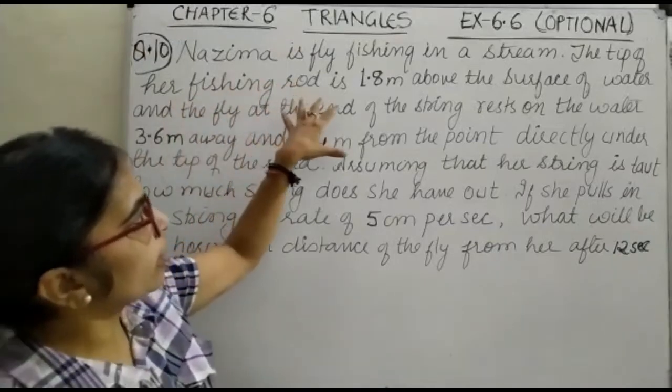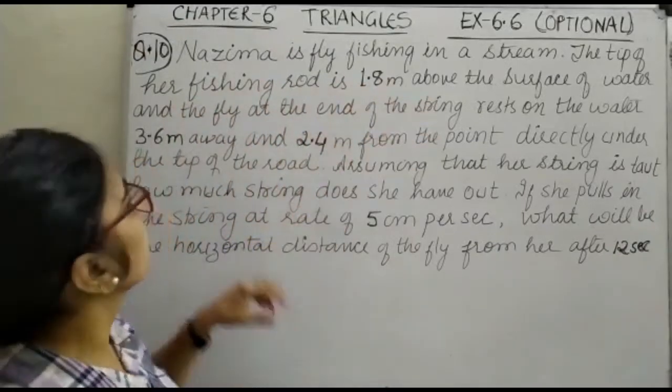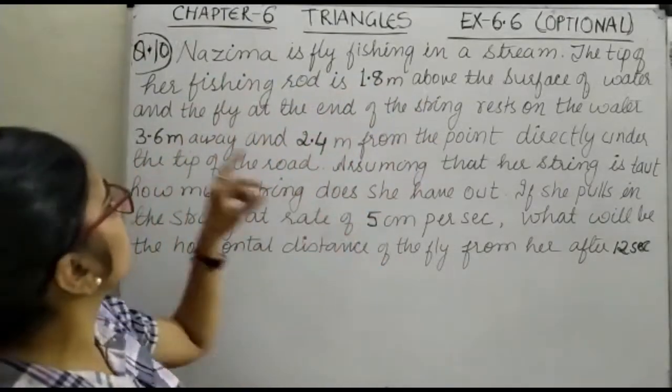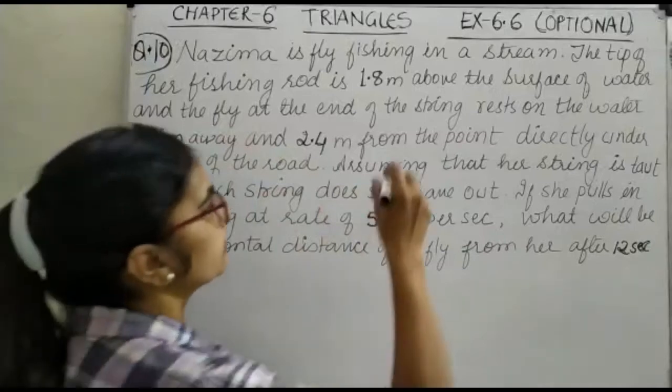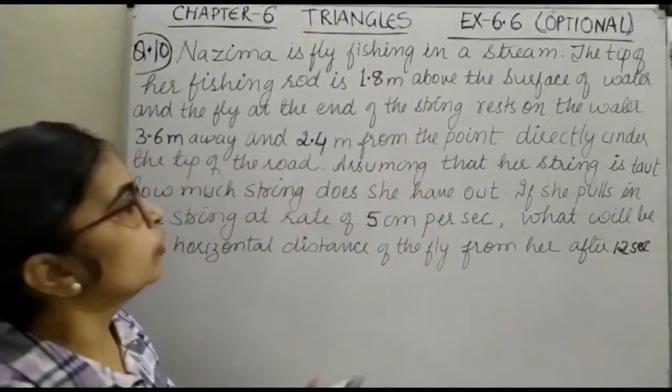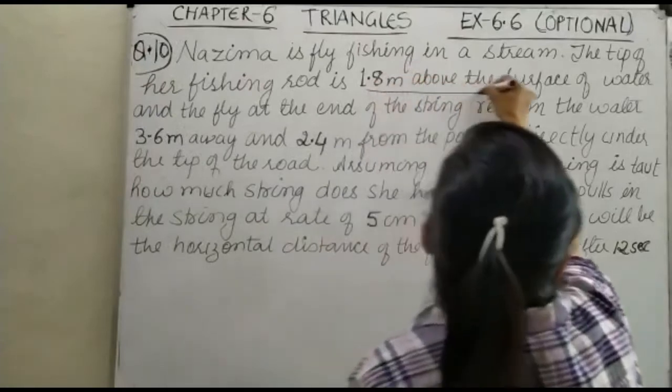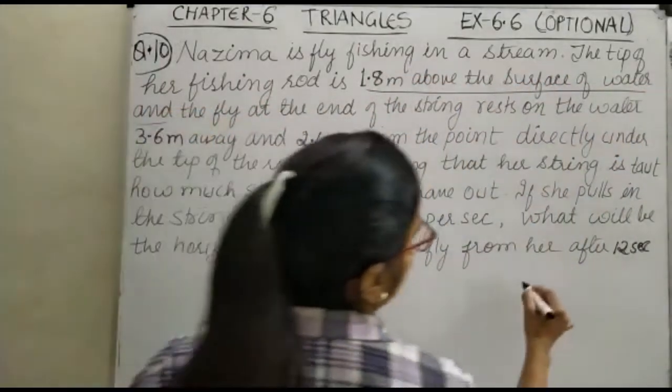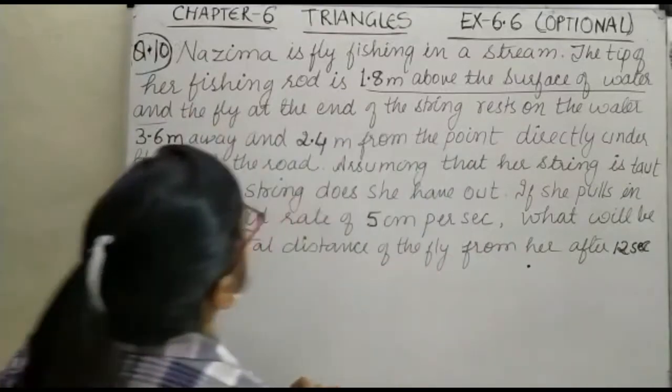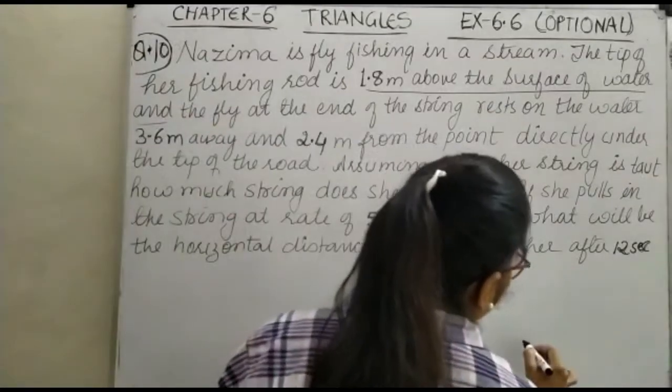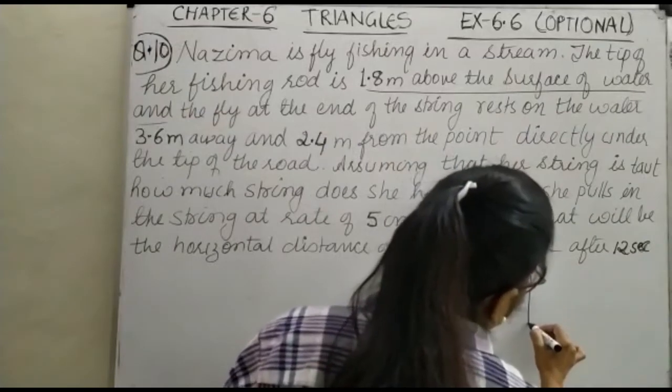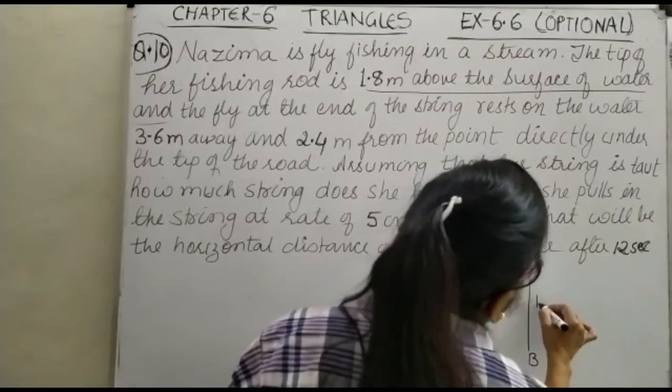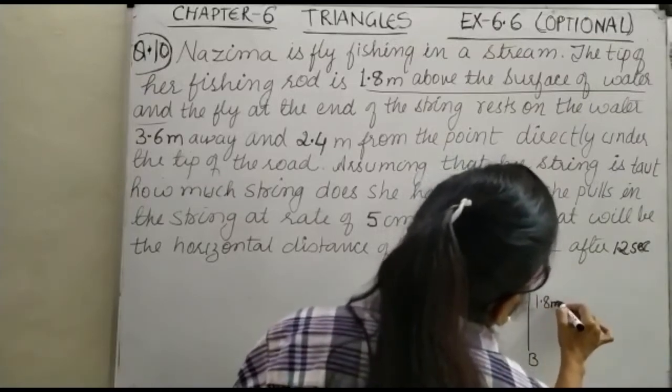Your question number 10 says: Nazima is fly fishing in a stream. The tip of her fishing rod is 1.8 meter above the surface of the water. So we can just make a figure. Suppose this A is your tip. This is from the water level, and this is given 1.8 meter.